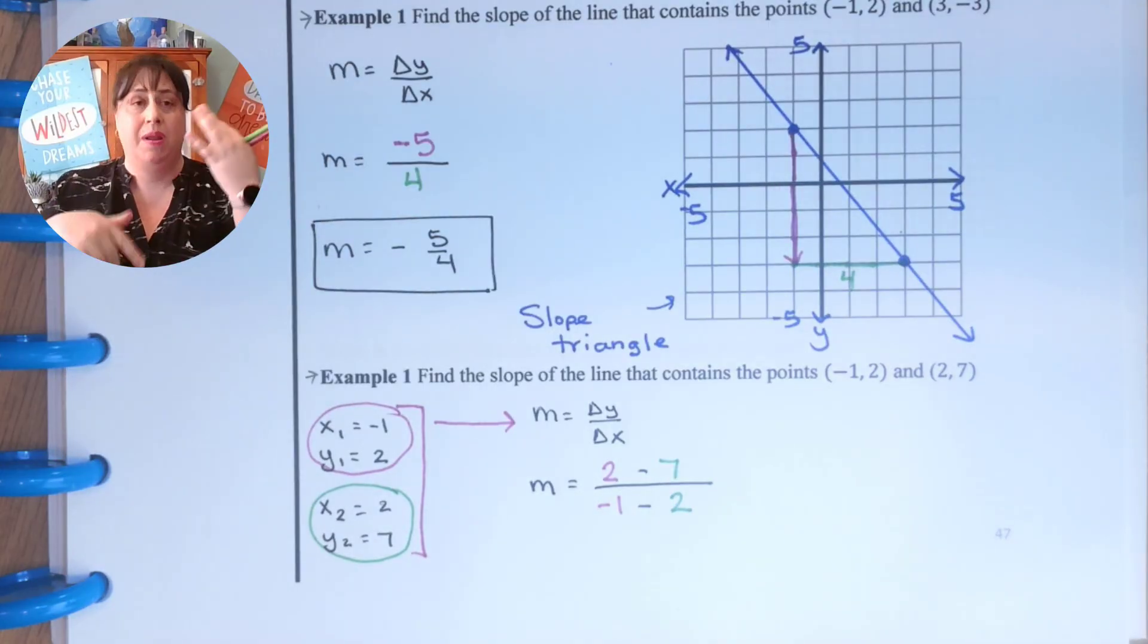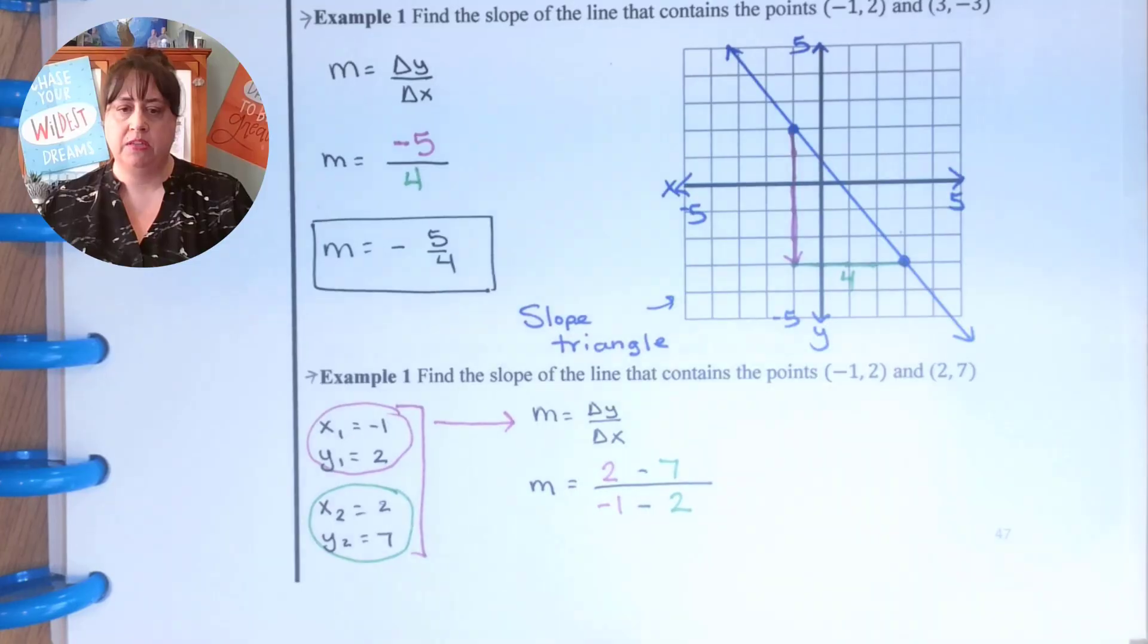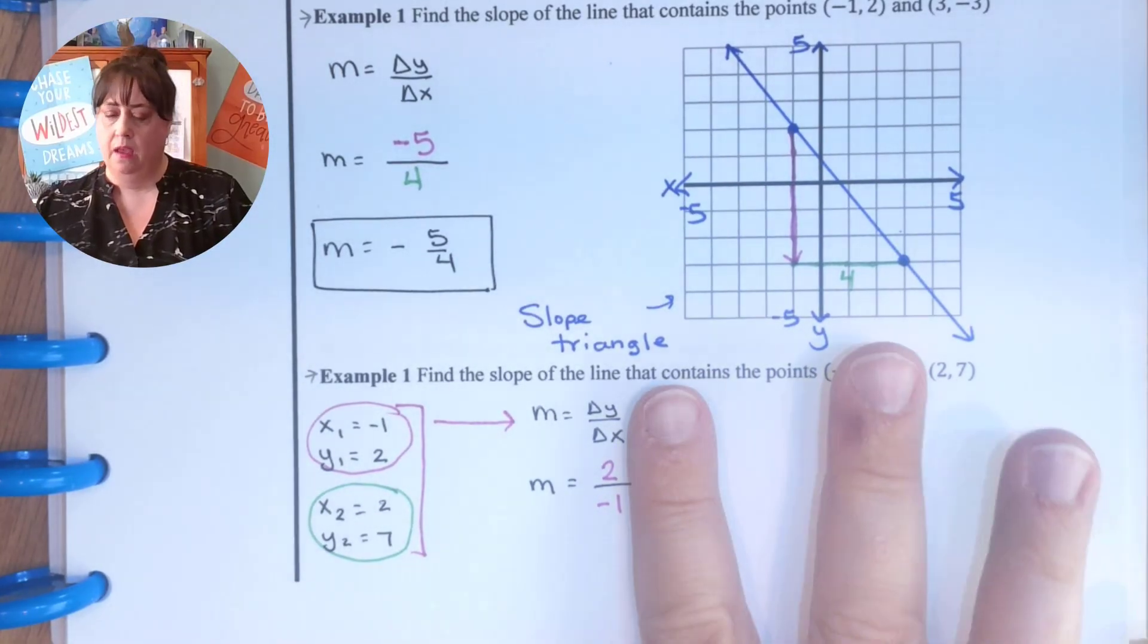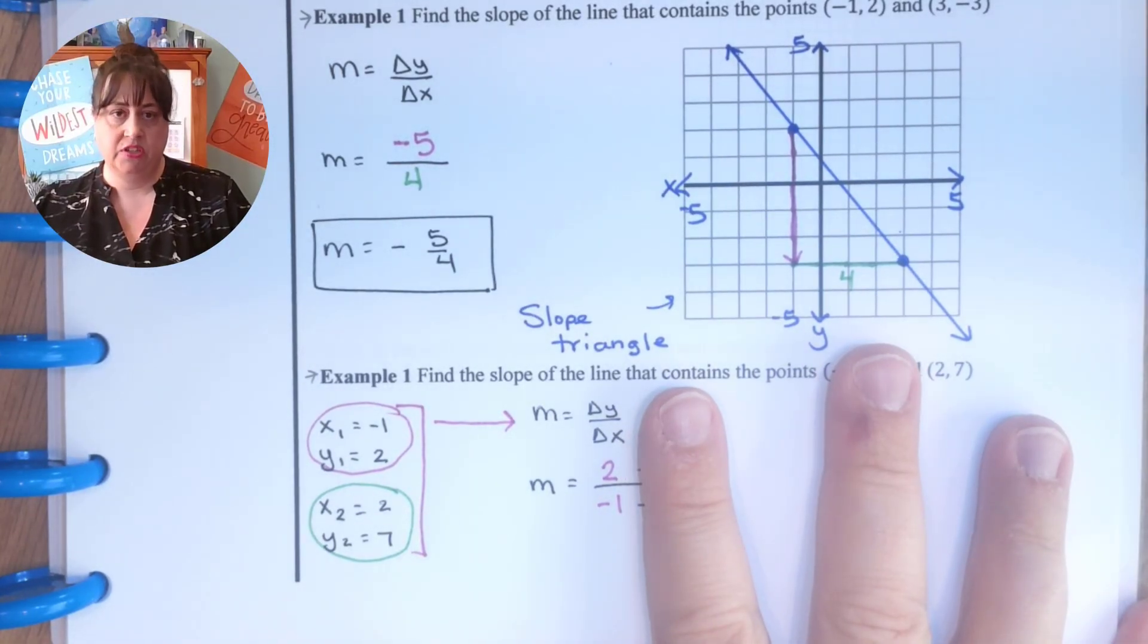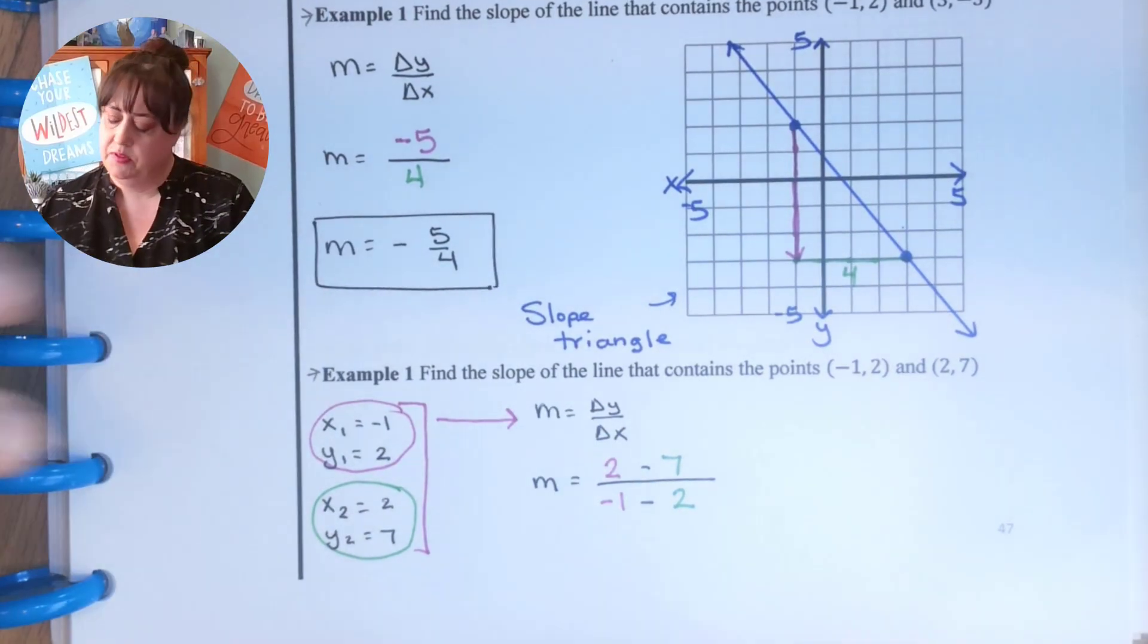So when I'm making my problem, I'm not trying to remember the equation in the book. I'm just trying to remember I'm subtracting my y's and subtracting my x's. If I start with the first point, I have to start with the first point, and then starting with my second point. So now it's just simplifying.